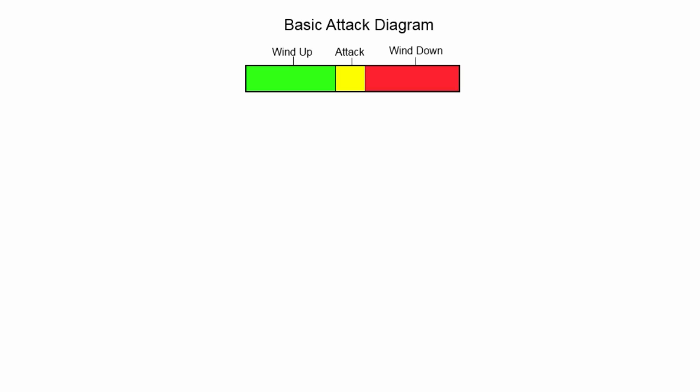Now, the last portion is the wind-down. This is shown in red, and this is the most important one. This is the animation the character goes through after the attack is performed. In our example, it would be the motion of lowering the gun back and putting it into your holster. Keep in mind that the wind-up and wind-down animation vary from character to character and are not necessarily equal, as shown in this chart.